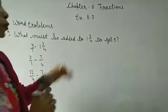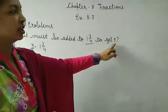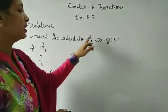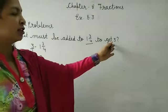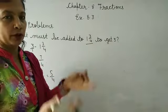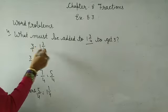What must be added to 1 and 3 upon 4 to get 3? If we get 3, we need to do what to add. What do we need to do with 3? We need to subtract. So we need to subtract 1 and 3 upon 4.